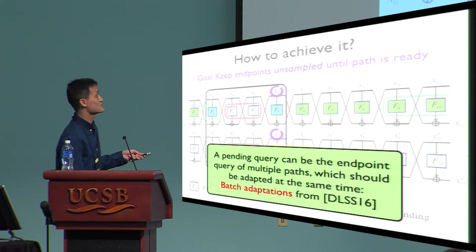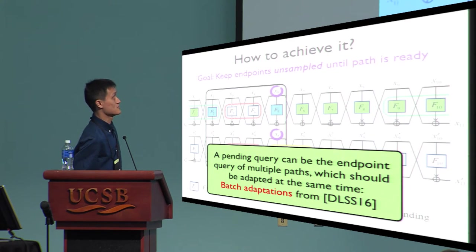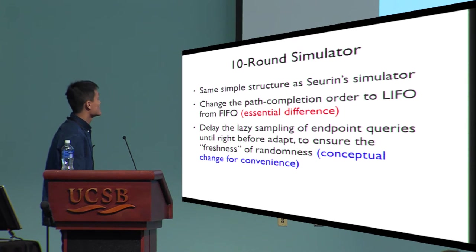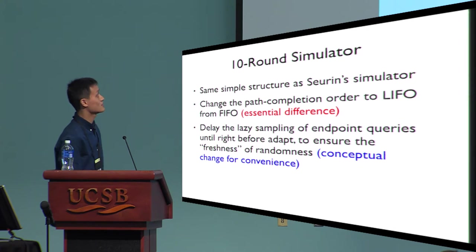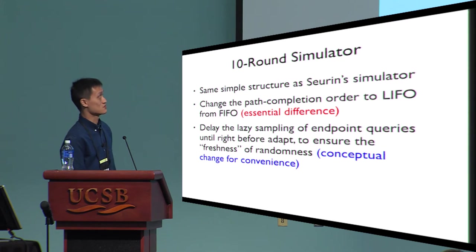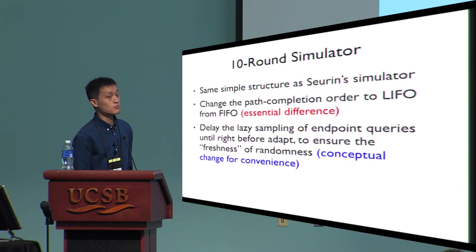These paths form a very nice tree structure, which makes our proof much easier. This is a summary of our 10-round simulator. It has the same simple structure as Seurin's simulator, but we change the completion order to LIFO and delay the lazy sampling to ensure the freshness of the randomness. Note that this is only a conceptual change, because one way or another the endpoint queries are sampled randomly — but as we saw in the example, this conceptual change leads to the LIFO order of path completion.